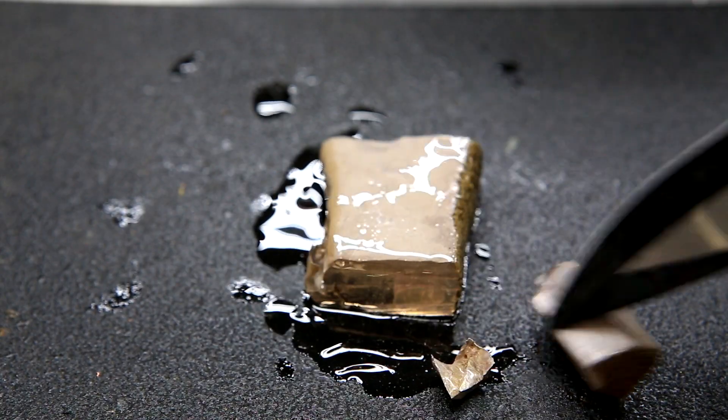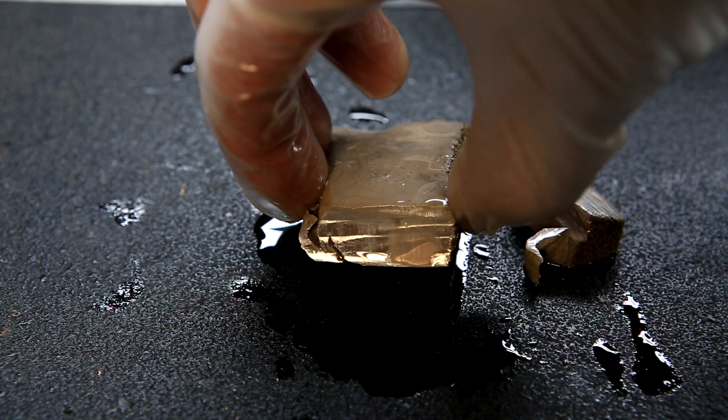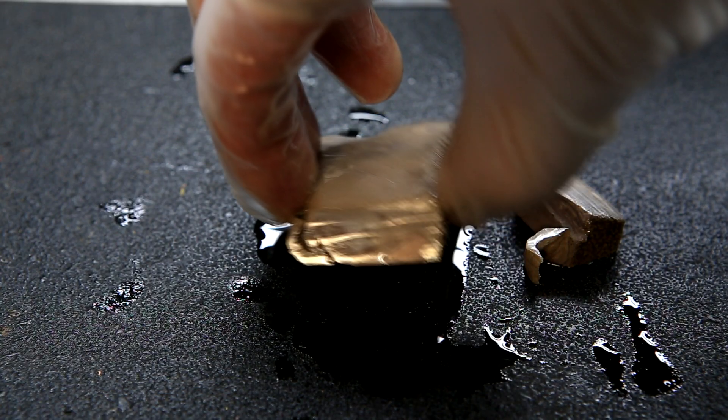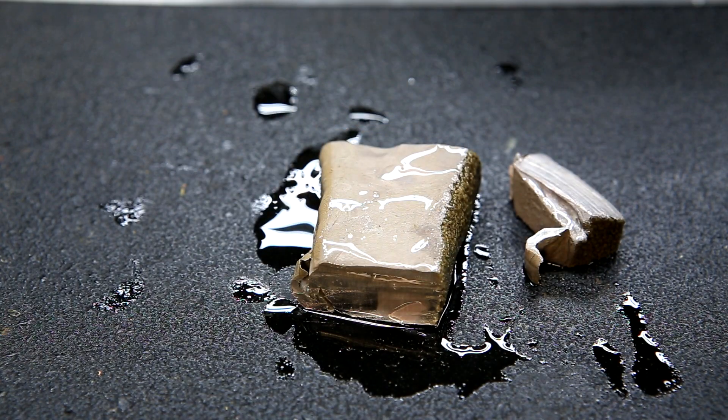The liquid around the metal is mineral oil that the sodium was stored in. You can see that once cut, the inside is a shiny silver. However, if left open to the air, it will quickly react and become dull again.